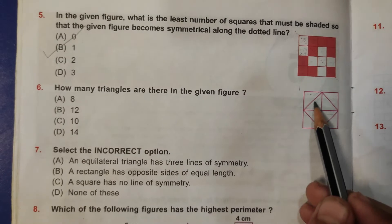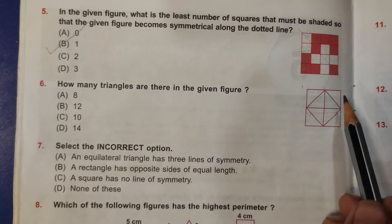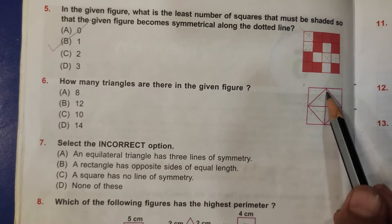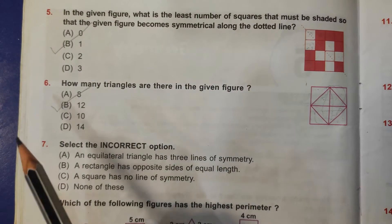Sixth question: how many triangles are there in the given figure? So 1, 2, 3, 4, 5, 6, 7, 8, 9, 10, and then here 11 and 12. Means B, 12 is the correct answer.